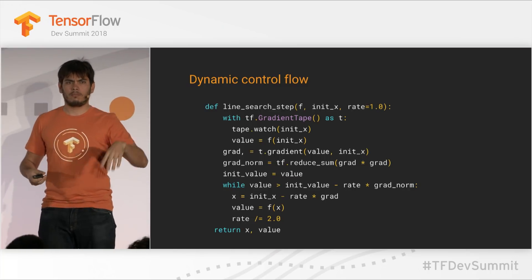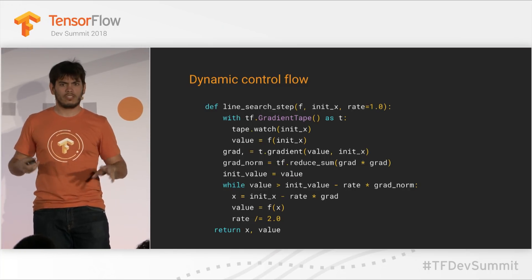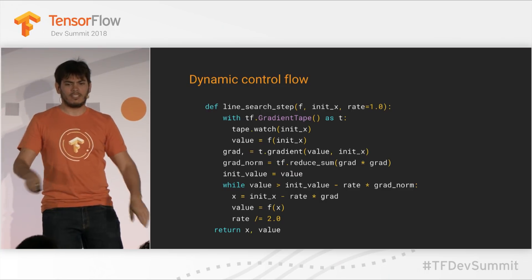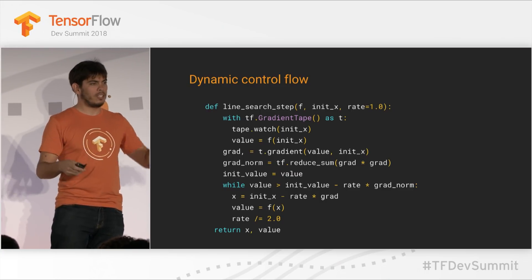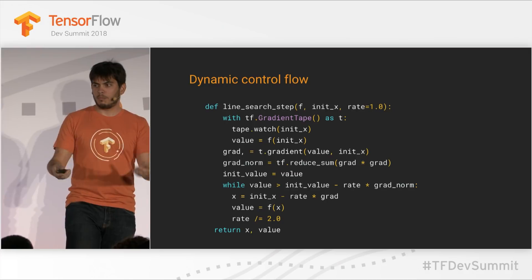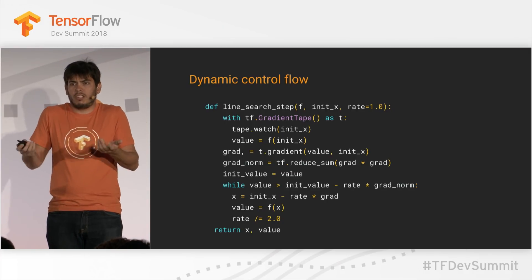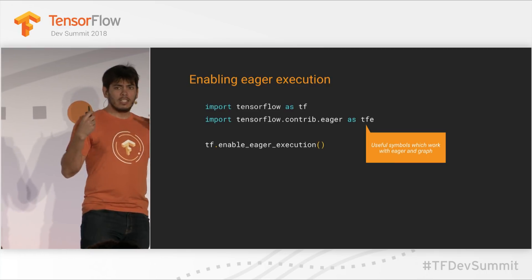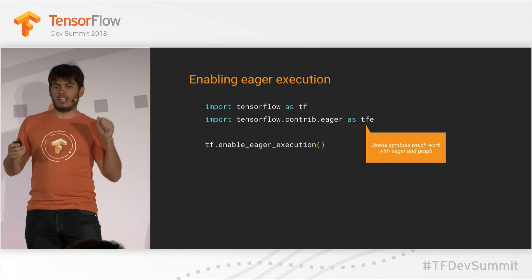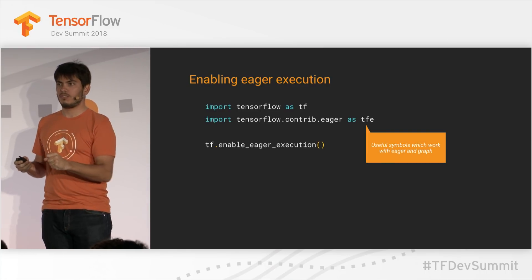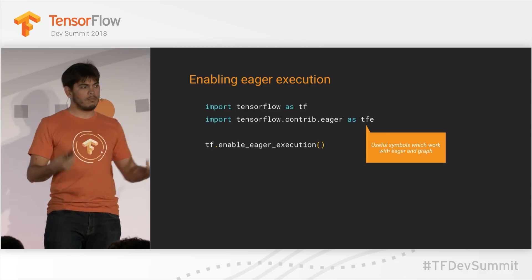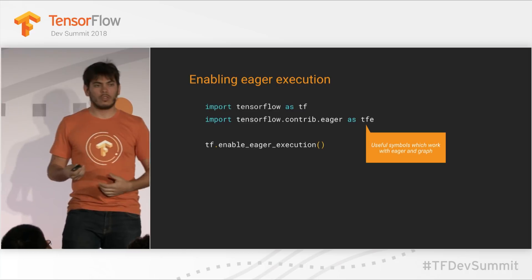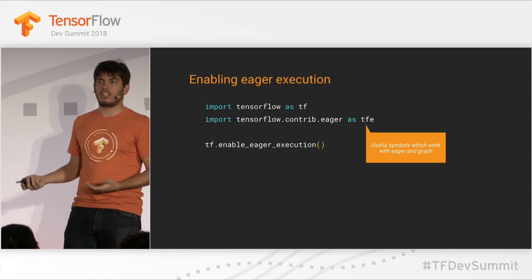Here is a simple Wolfe conditions line search example — it has while loops that depend on complicated values computed during execution, and this runs just fine on whatever device you have. Together with enableEagerExecution, we're also bringing you a few new symbols in TensorFlow that make it easier to write code that works both when building graphs and executing eagerly. We're also bringing a new way of doing gradients.